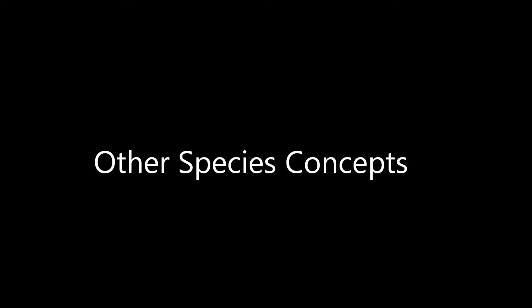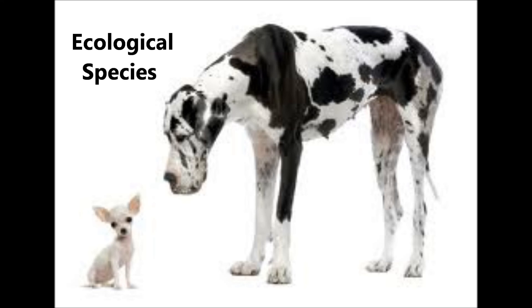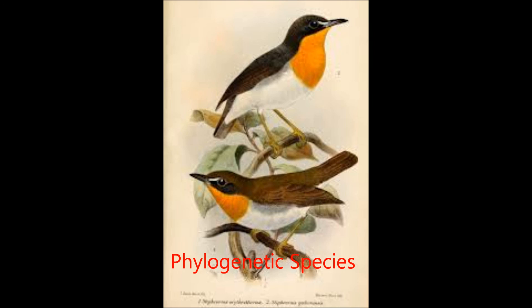Now let's talk about other species concepts. Species concepts are used depending on the type of question asked. Other species concepts include the morphological species concept — individuals with similar morphology are a single species; works on sexual and asexual species, but can be subjective. The ecological species concept — the ecology of individuals defines the species, for example food, shelter, physiology; works on sexual and asexual species, but needs a clear understanding of the ecology of organisms. The phylogenetic species concept — differences at the genetic level define species; works on sexual and asexual species, but needs to define the degree of difference allowed and still be considered a single species.